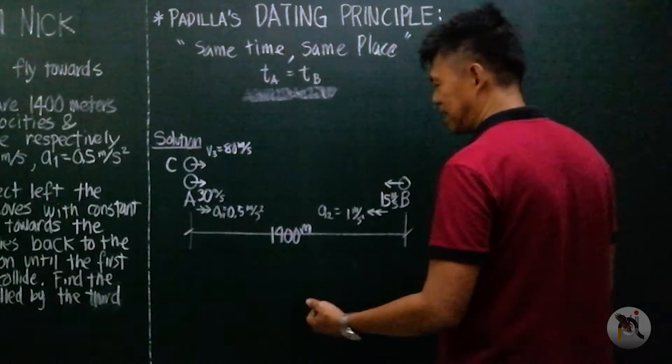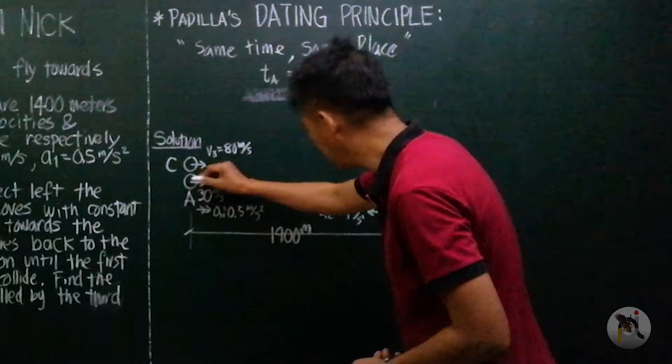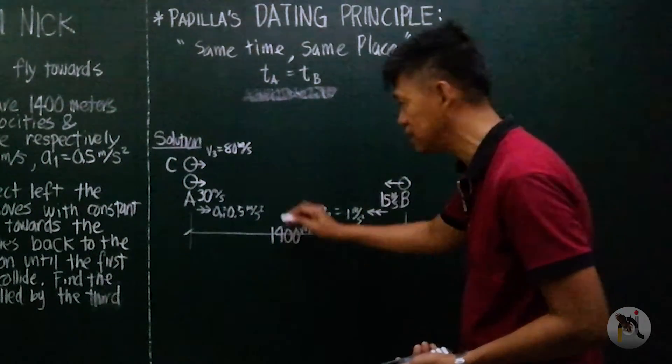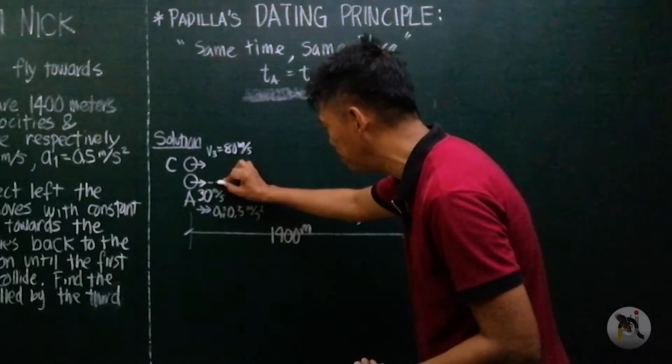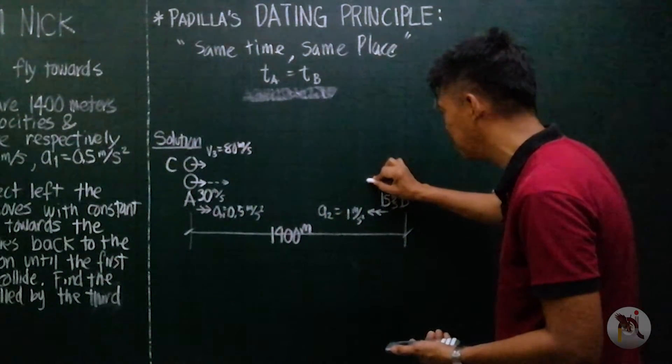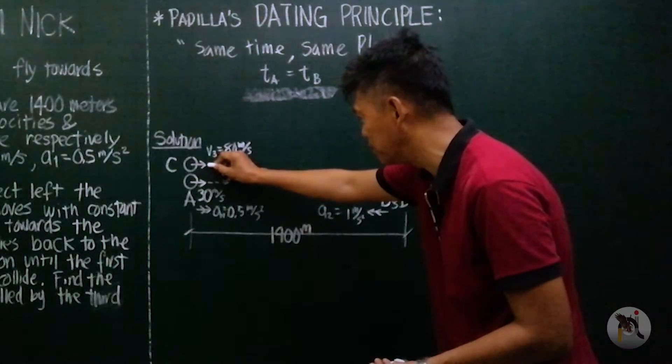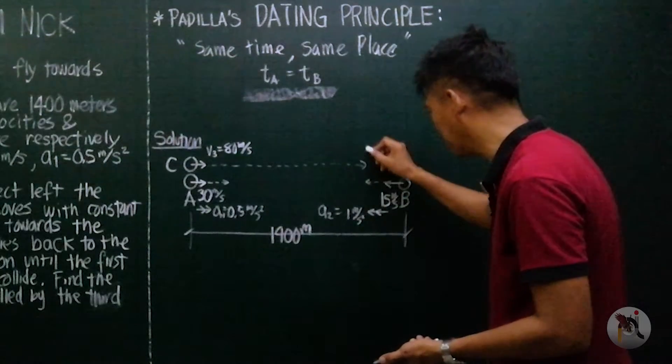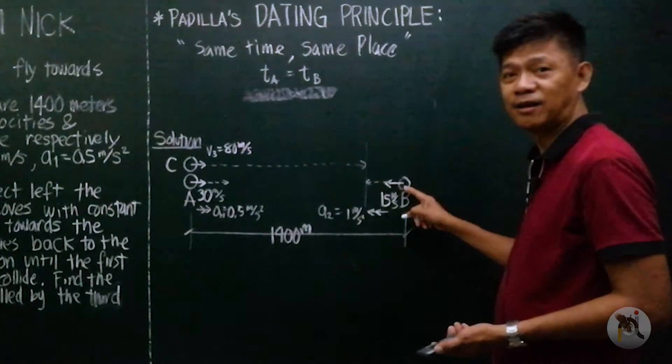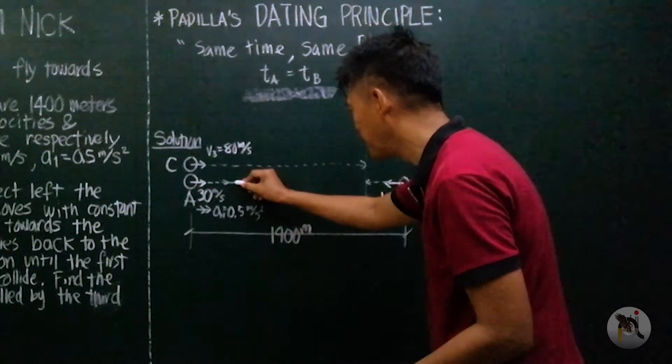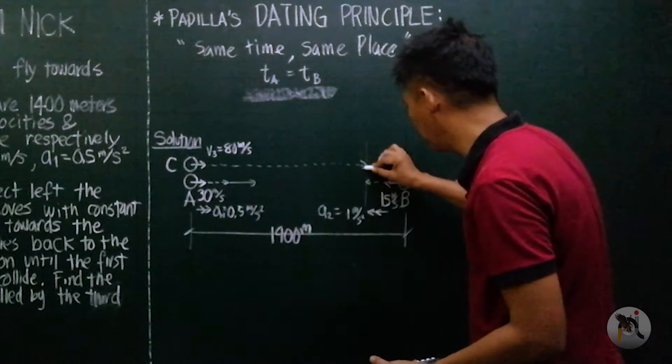What happens is this: as this object A and object B, 1400 meters apart initially, as they move, they move towards each other. But this is a faster moving object. By that time, object C will reach object B.